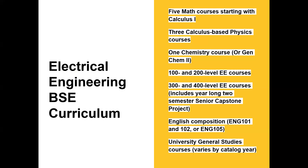Program information: electrical engineering is a 120-hour minimum of coursework, and it is a very prescribed and prerequisite-driven program. There are no free electives. Only when you reach the upper division are you allowed to choose technical electives from a prescribed bucket. The program includes five math courses starting with calculus one, three calculus-based physics courses, general chemistry — specifically general chemistry two — and then 100- and 200-level electrical engineering coursework.